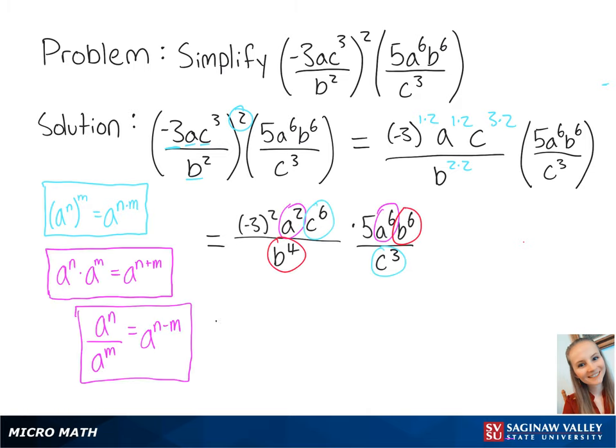Using our exponent rules, we can simplify the like terms even further, giving us 9 times 5 times a to the 2 plus 6, times b to the 6th minus 4, times c to the 6th minus 3. This leaves us with 45a to the 8th times b squared times c cubed. This is the final answer.